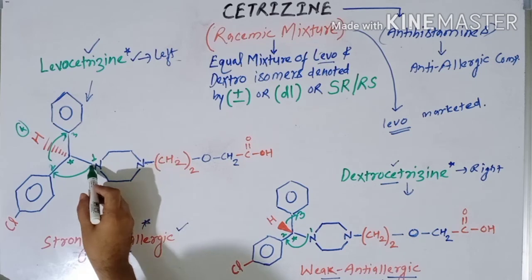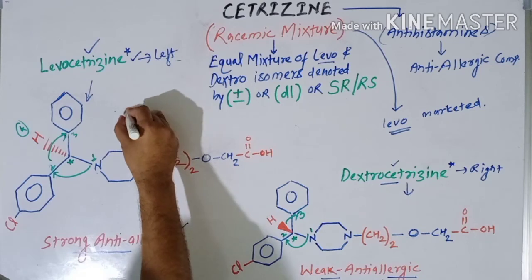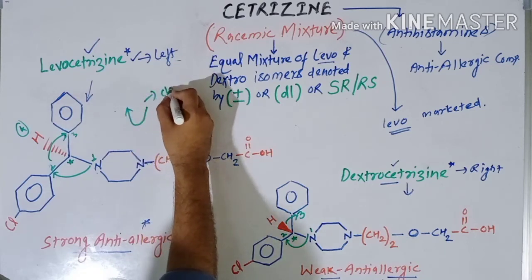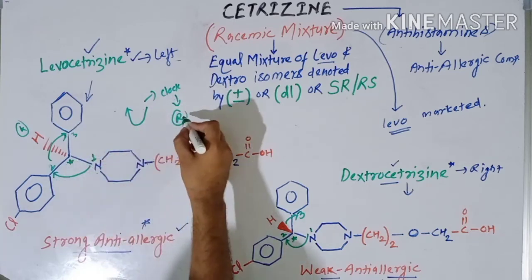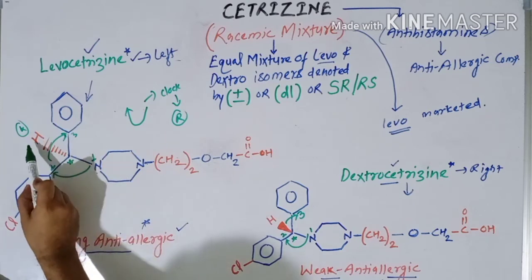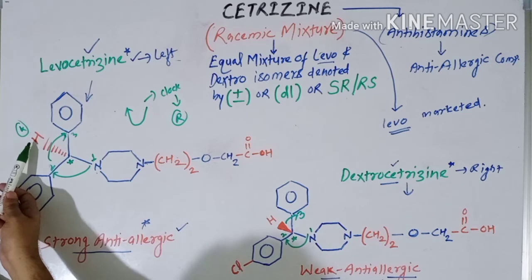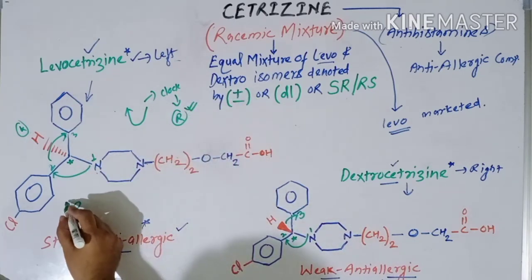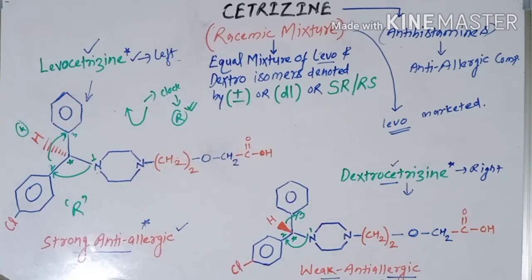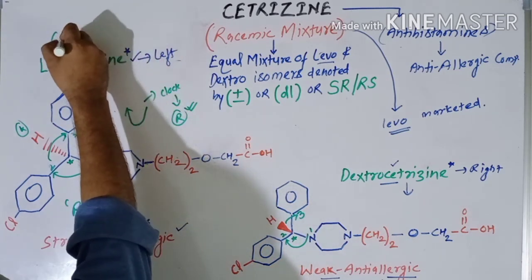Drawing an arrow from priority 1 to 2 to 3, the arrow moves in a clockwise direction, which suggests an R configuration. Now we check the position of the lowest priority group — hydrogen — which is placed below the plane. As discussed in previous classes, if the lowest priority group is below the plane, the configuration remains as assigned. Therefore, this carbon has the R configuration, meaning levocetirizine is the R isomer.